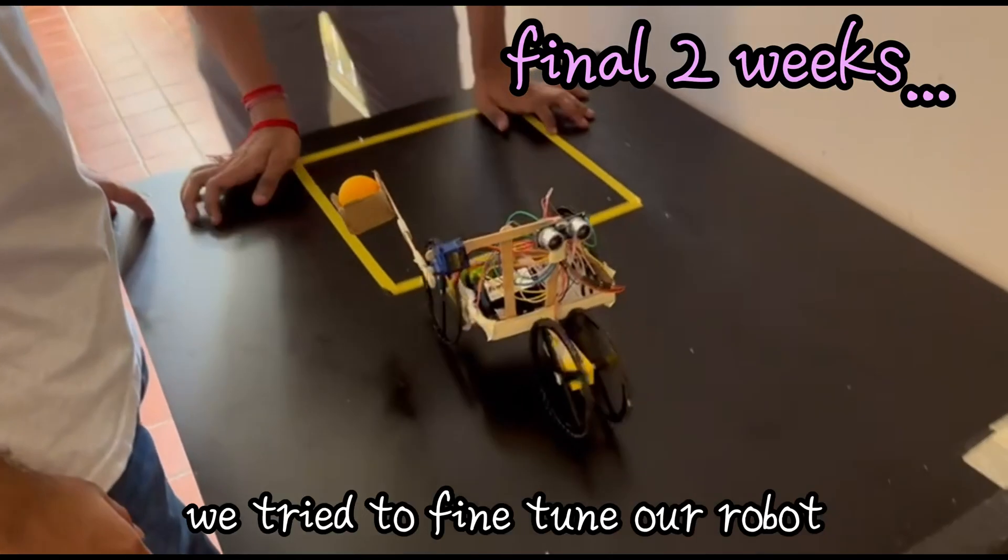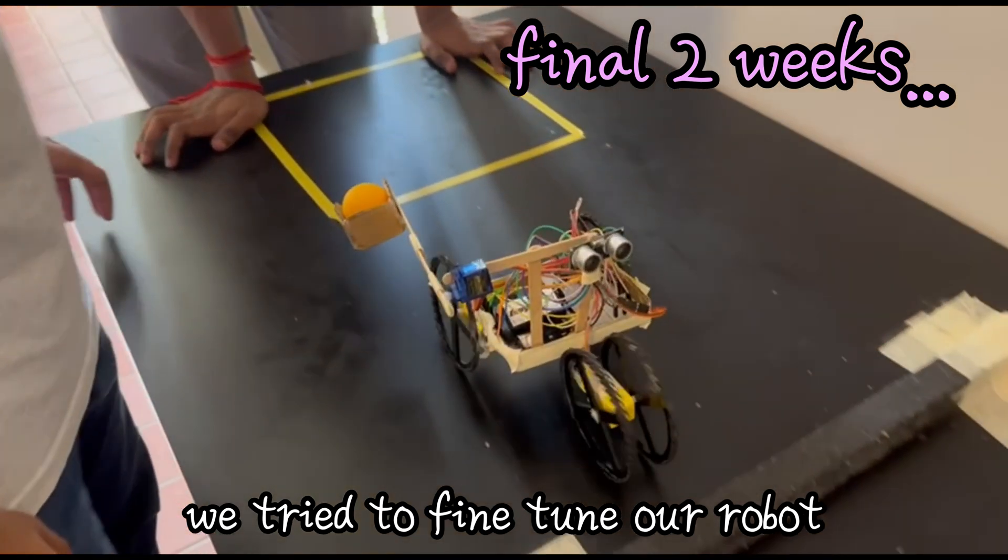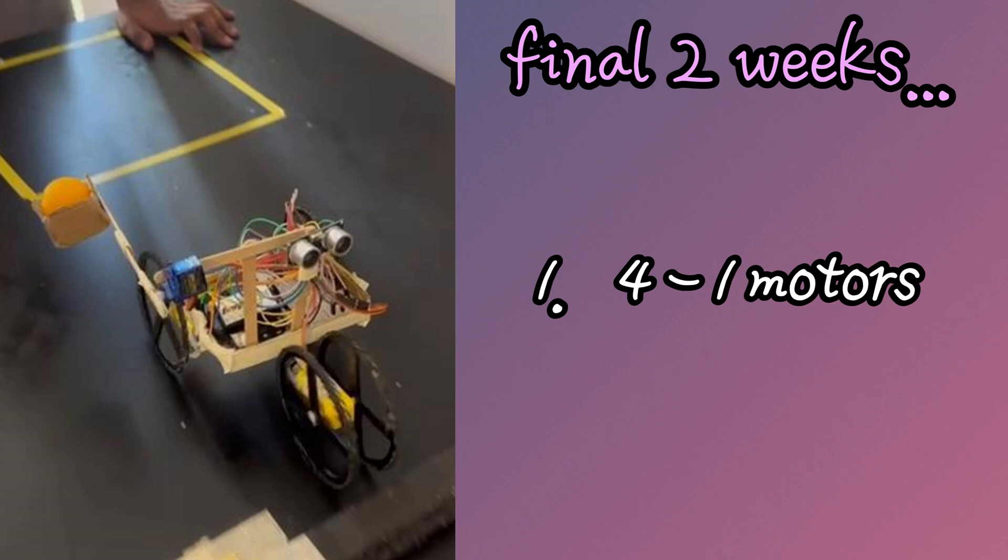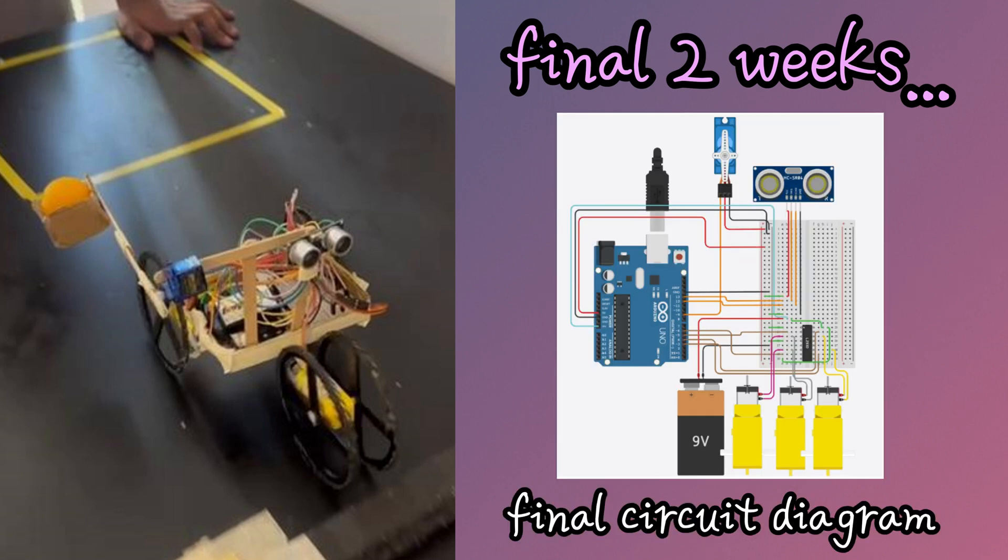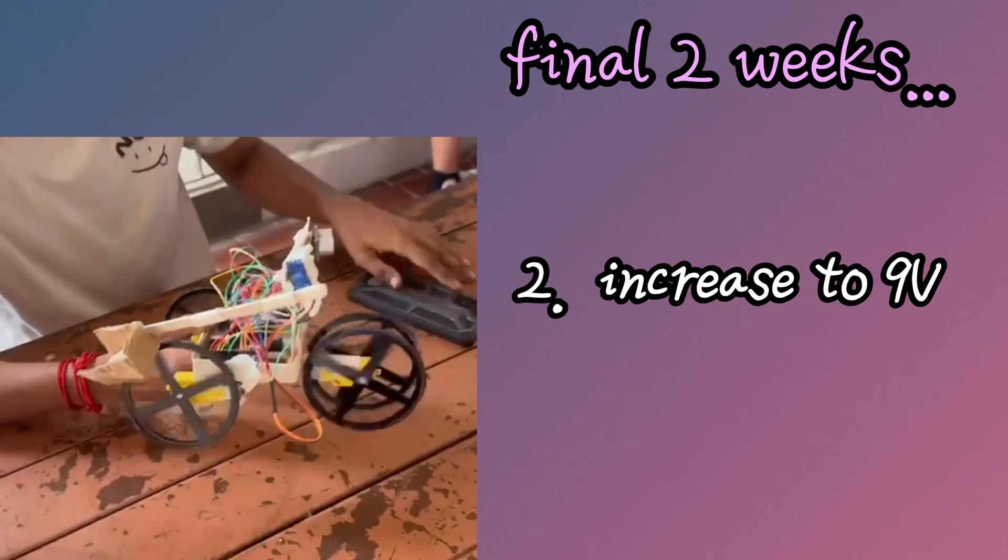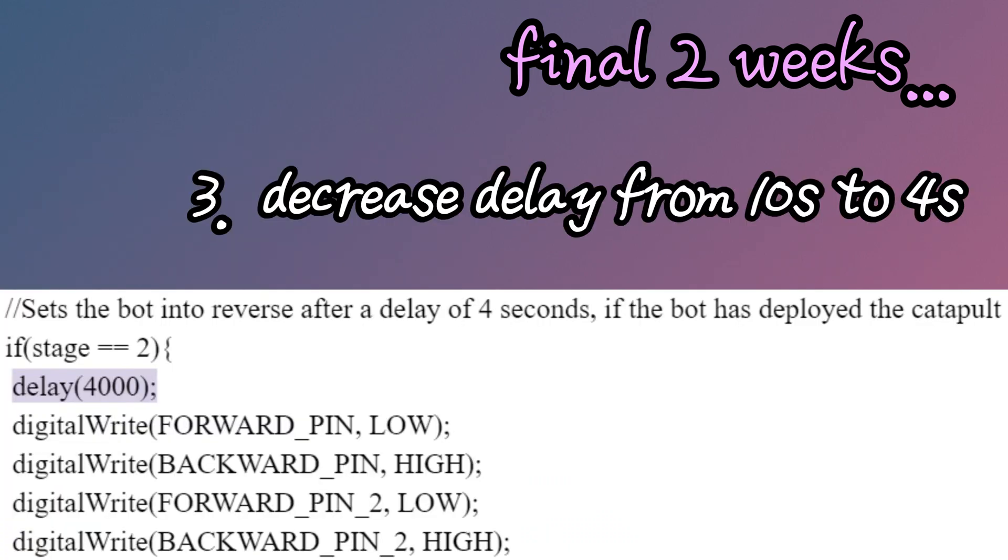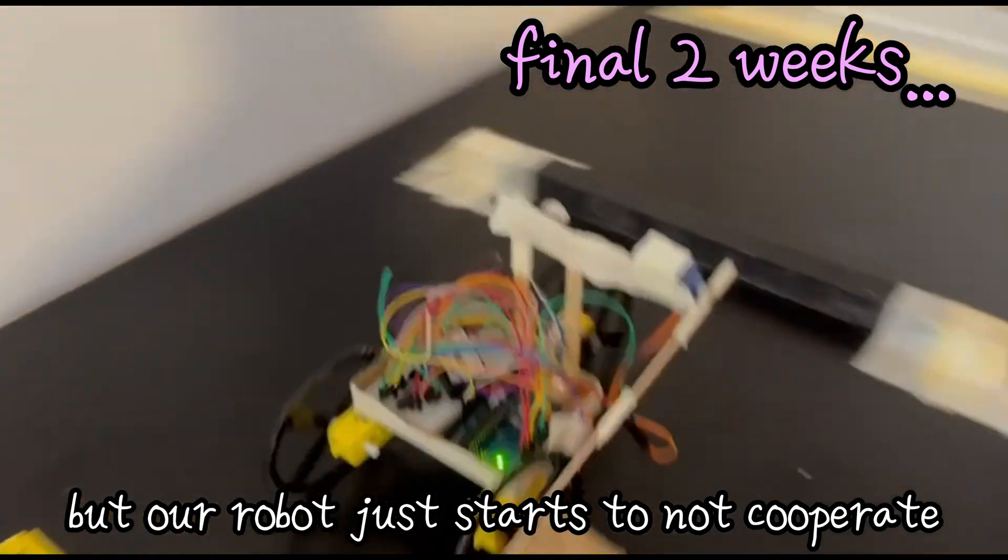In the final two weeks, we tried to fine-tune our robot by removing one front motor to reduce its weight. This is how our final circuit diagram looks like with three motors. We also tried to increase the voltage to 9 volts for our robot to travel faster and decrease the delay at the wall before reversing to ensure that it can complete the obstacle course within 30 seconds, but our robot just starts to not cooperate.